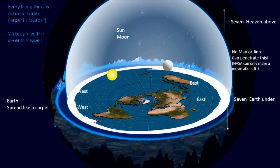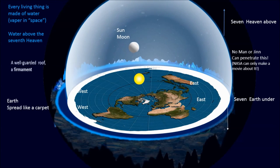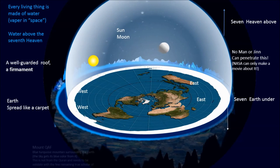Have not those who disbelieve known that the heavens and the earth were joined together as one united piece, then We clove them asunder? And We have made from water every living thing. Will they not then believe? And We made the heaven a roof, safe and well-guarded. Yet they turn away from its signs.